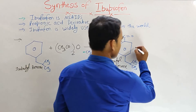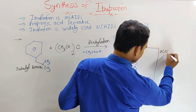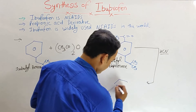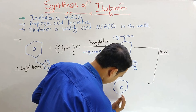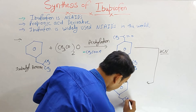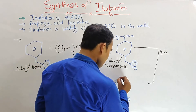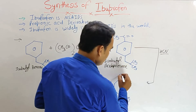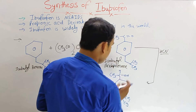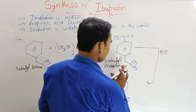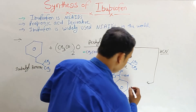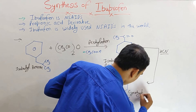When isobutyl acetophenone undergoes reaction with hydrogen cyanide (HCN), a cyanohydrin derivative is formed. This intermediate has the isobutyl chain, CH3, an OH group, and a CN group attached — this is the cyanohydrin derivative.